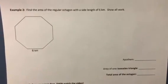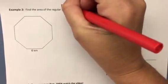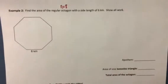All right, we're going to try example two. We are given a regular octagon, so I know that it's going to be eight sides, with a side length of six kilometers.